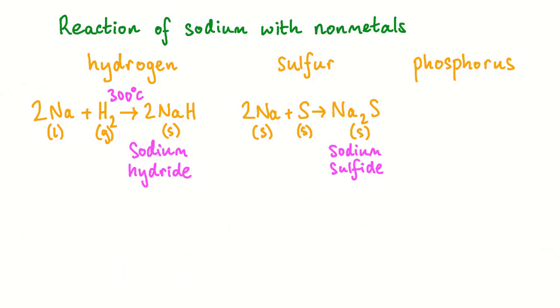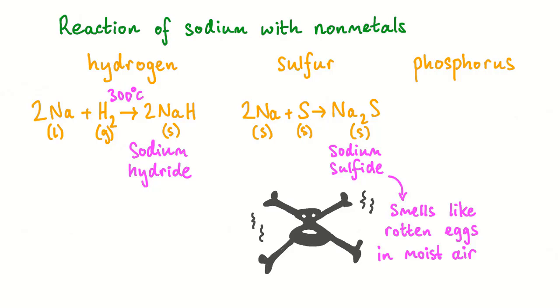Sodium sulfide is easily formed in the laboratory by heating sodium metal with elemental sulfur. Sulfur is a yellow powder. Sodium sulfide is a toxic compound and it reacts with moist air to give off hydrogen sulfide gas. Hydrogen sulfide gas smells of rotten eggs.